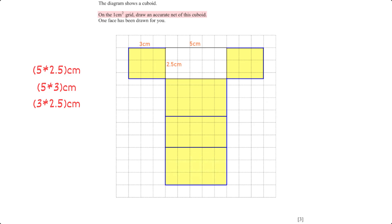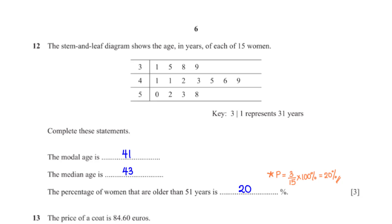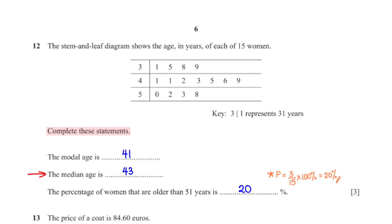The stem and leaf diagram shows the age in years of each of 15 women. Complete these statements. The modal age is simply the most recurring age from the stem and leaf plot — this age is 41. The median age is the middle age. Since the ages are arranged in ascending order, we find its position using the formula half of n plus 1, where n is 15, giving us 8. From the stem and leaf diagram the age in the 8th position is 43.